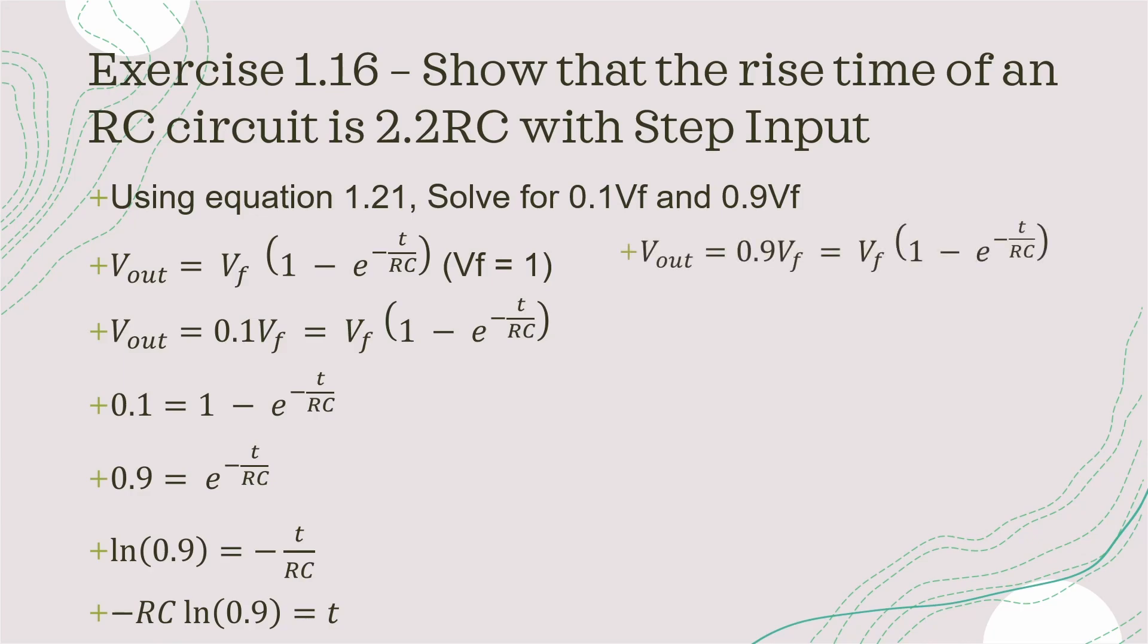Now going through the same steps for the 90% of final voltage, we basically replace this 0.1 over here with 0.9 and go through the same steps. So now we have minus RC natural log of 0.1 is equal to t.